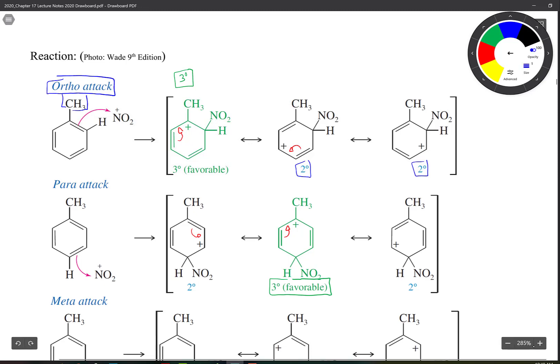I want to point out that both ortho and para end up with positive charges on the alkyl substituted carbon of benzene. That is a favorable situation. That situation gives us a lower activation energy because it's a more stable intermediate.